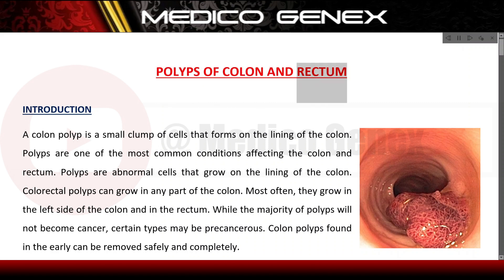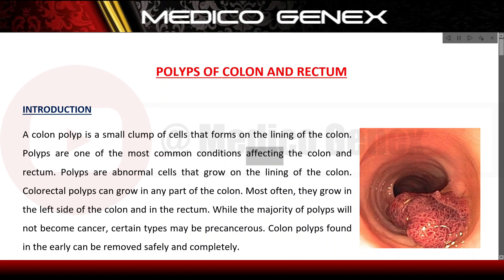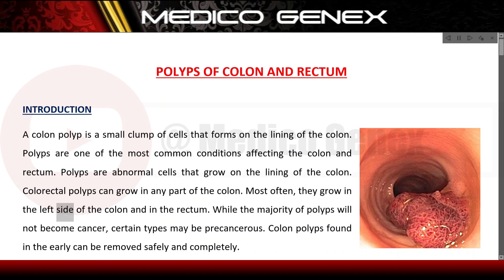Polyps of Colon and Rectum — Introduction. A colon polyp is a small clump of cells that forms on the lining of the colon. Polyps are one of the most common conditions affecting the colon and rectum. They are abnormal cells that grow on the lining of the colon. Colorectal polyps can grow in any part of the colon, but most often they grow in the left side of the colon and in the rectum.